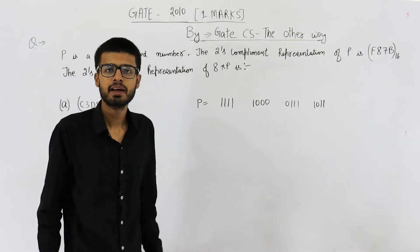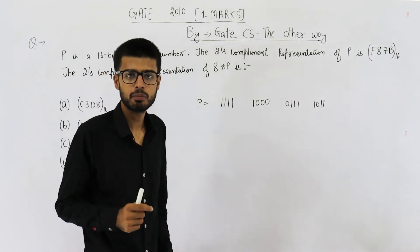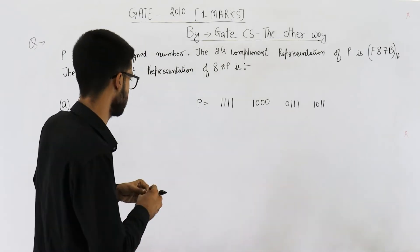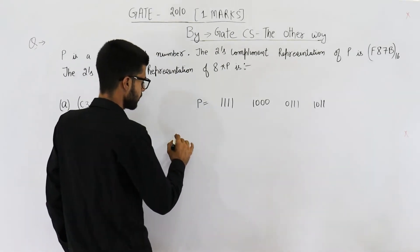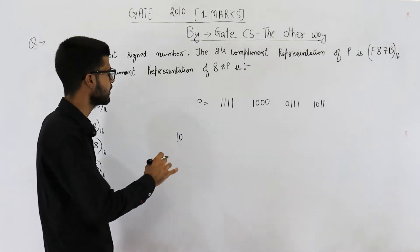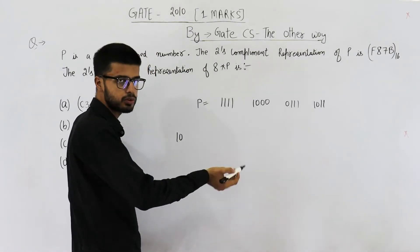We need to multiply it by 8. Multiplying by 8 means multiplying by 2 three times or simply multiplying by 2 raised to the power 3. Whenever you want to multiply a binary number with 2, we just add a 0, add a 0 on right side.